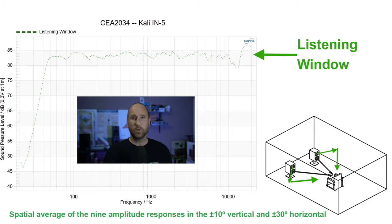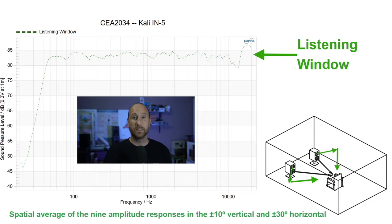The other aspect to consider is the listening window. This is generally what a lot of people look at when they look at data — they won't really pay attention to the direct sound as much. However, I do. The reason is that most people when setting up their speakers may not set them up dead on-axis. It could be one, two, three, four, maybe even five degrees off, and that's probably close enough to be considered on-axis.